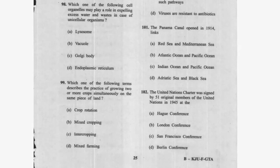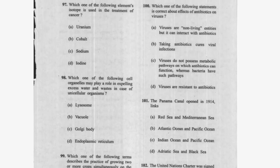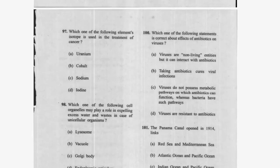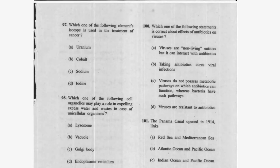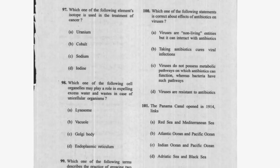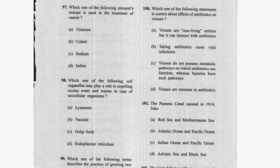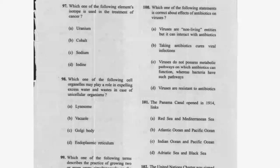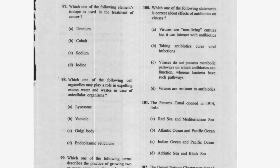Question 96: Which term describes the practice of growing two or more crops simultaneously on the same piece of land? Mixed cropping. Question 97: Which statement is correct about the effects of antibiotics on viruses? Viruses do not possess metabolic pathways on which antibiotics can function, whereas bacteria have such pathways — option C.